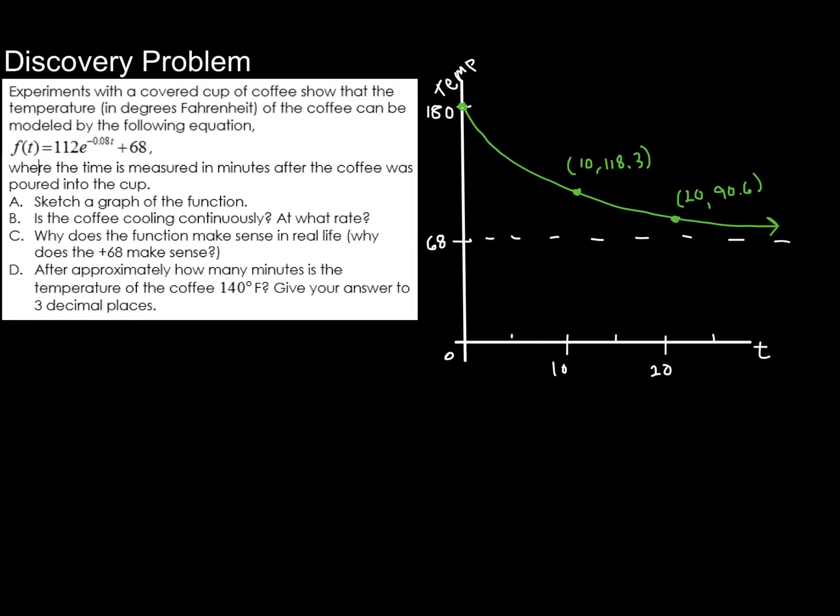Alright, so here is the function, f of t. I've plotted the y-intercept, which is nice and easy, I can do that in my head. If t is 0, the y-value is 180. I plotted a point at 10. When t is 10, after 10 minutes, the temperature is 118.3. And after 20 minutes, the temperature is 90.6. And I have my horizontal asymptote here, so I can see that the exponential decay function would be getting closer to, but never quite touching 68.